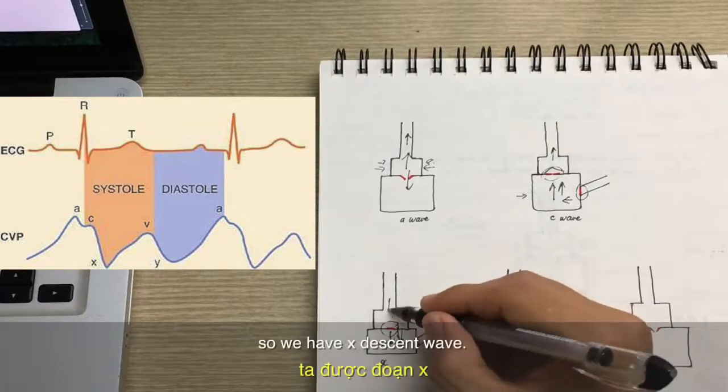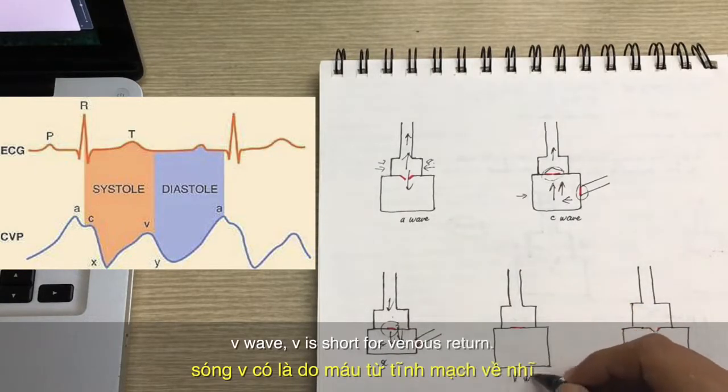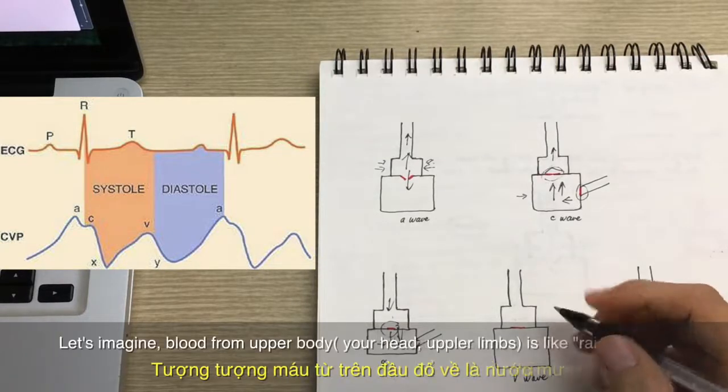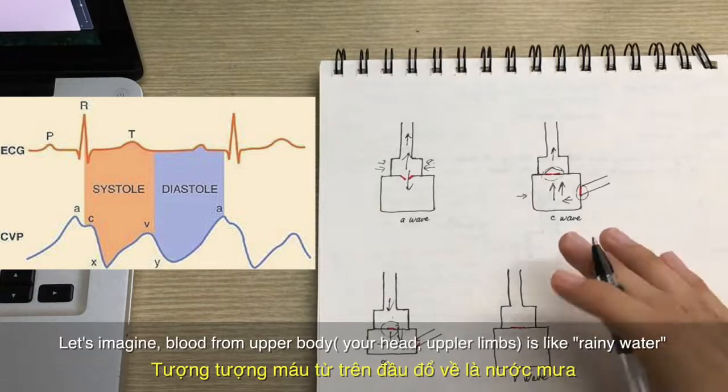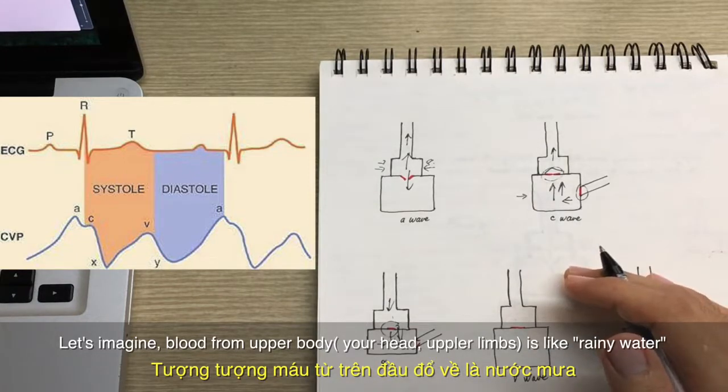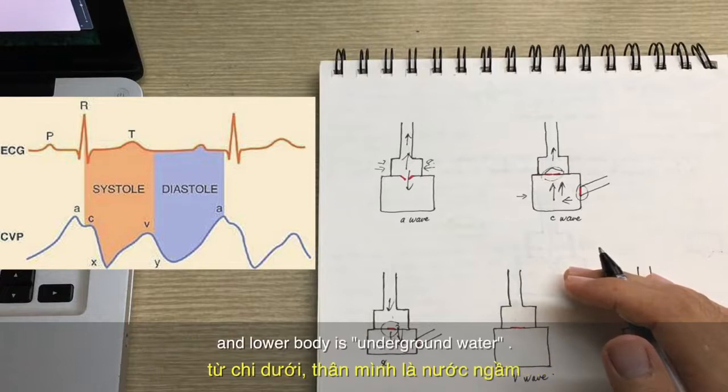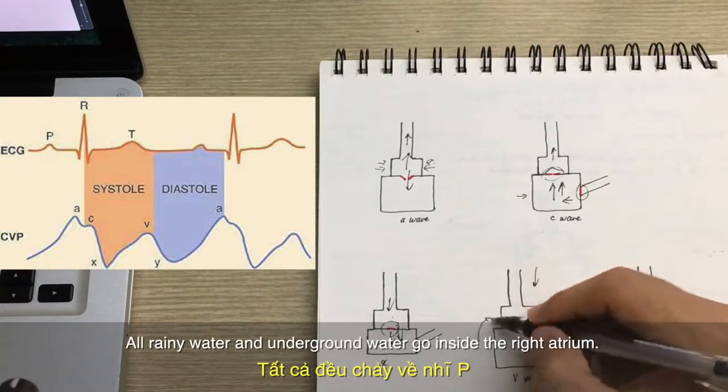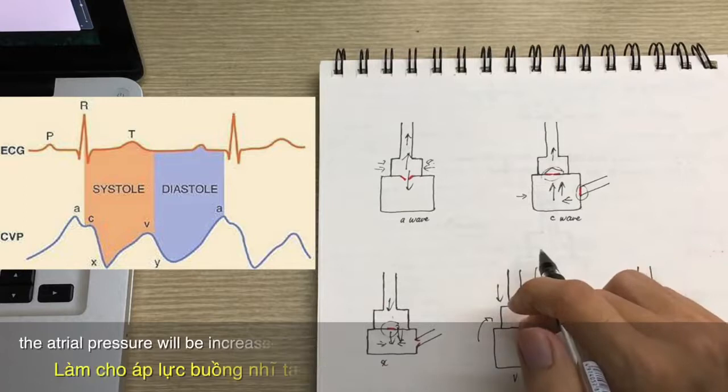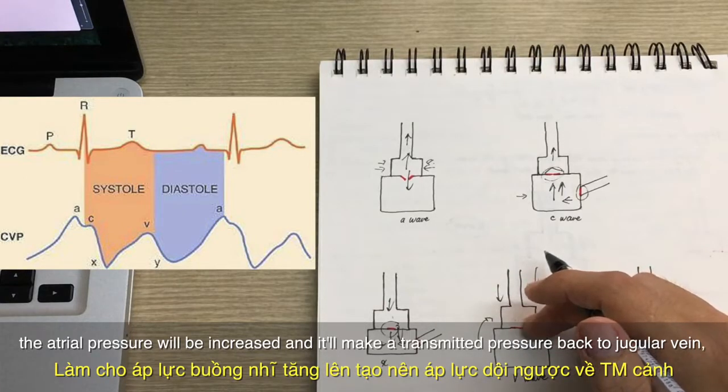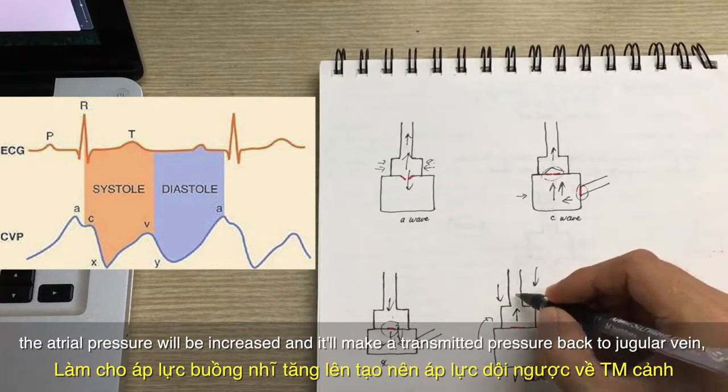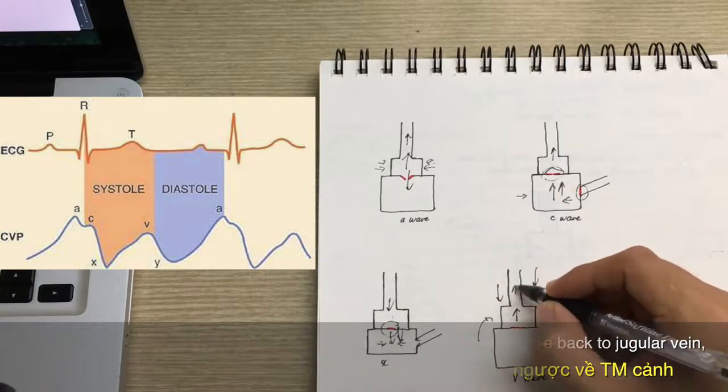The next one is V wave. V is short for venous return. So let's imagine that blood from your upper body, your head, your upper limbs is like raining water. And lower body is underground water. So all raining water and underground water go inside the right atrium. So the atrial pressure will be increased, and it will make a transmitted pressure back up to the jugular veins. And so we have the V wave.